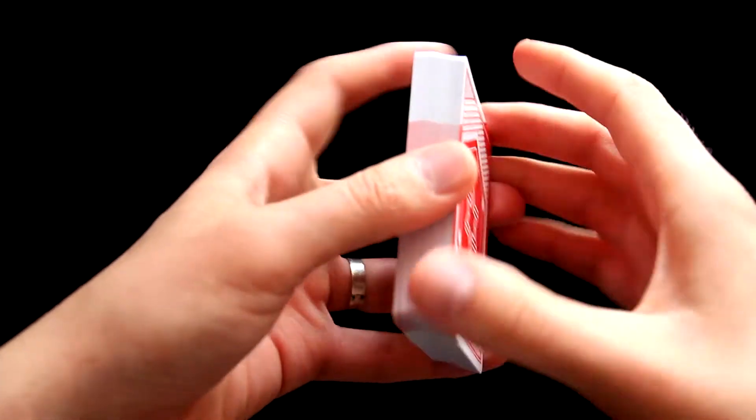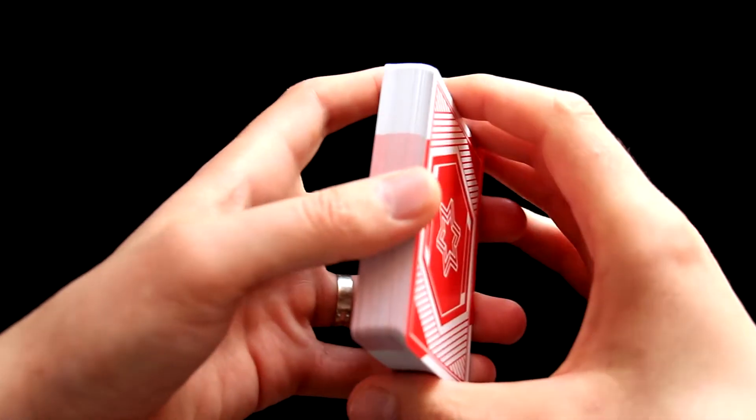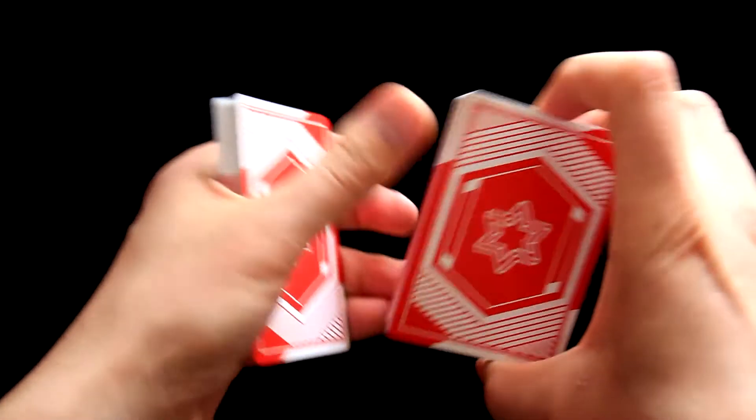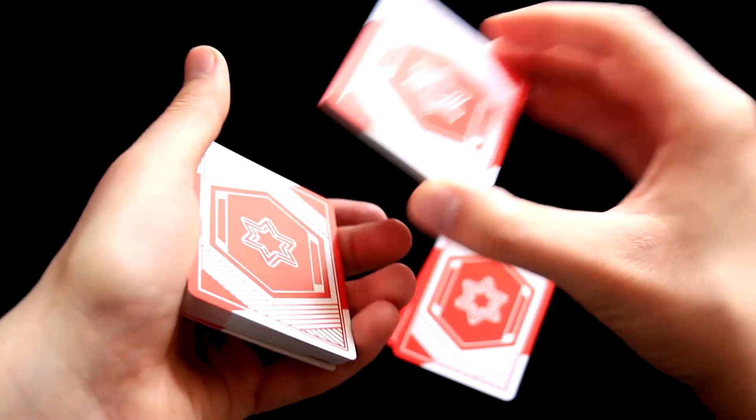To give maybe even a better illusion that the deck was shuffled, you can chain this cut as you have seen in the performance. So you would do exactly the same until the point where you place everything above the break on the table.